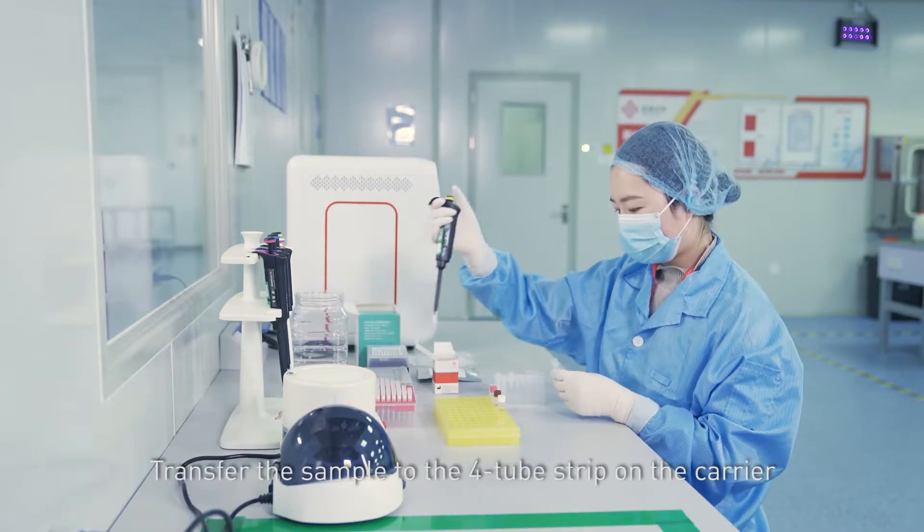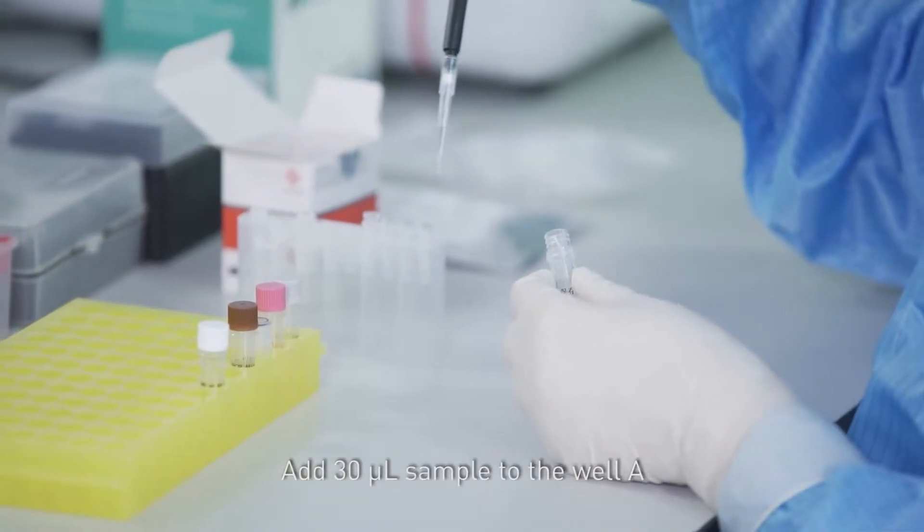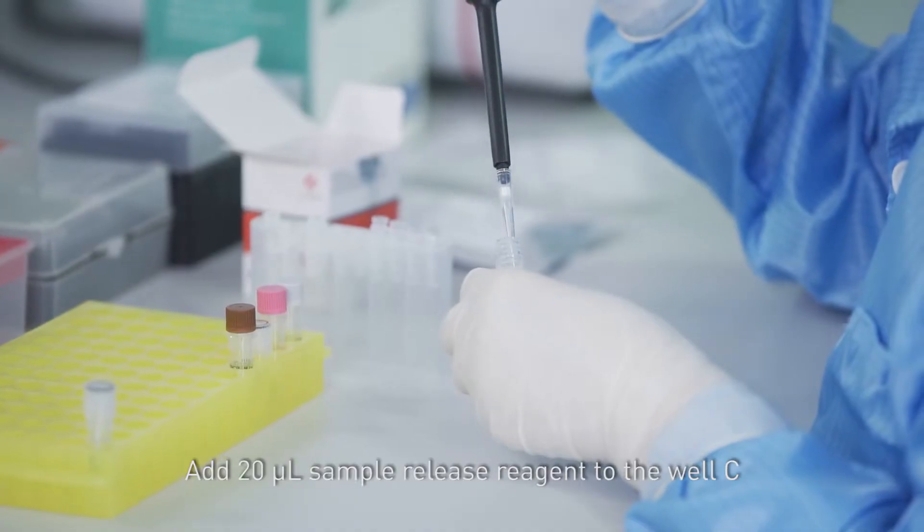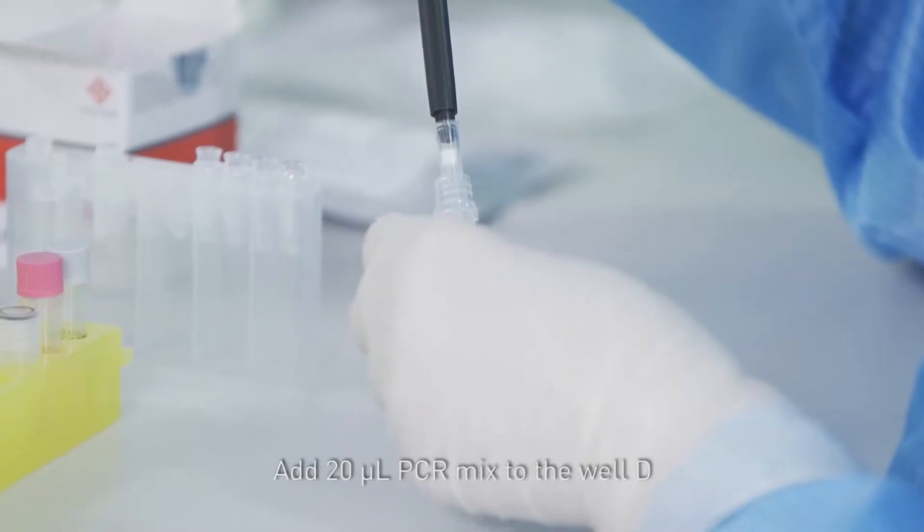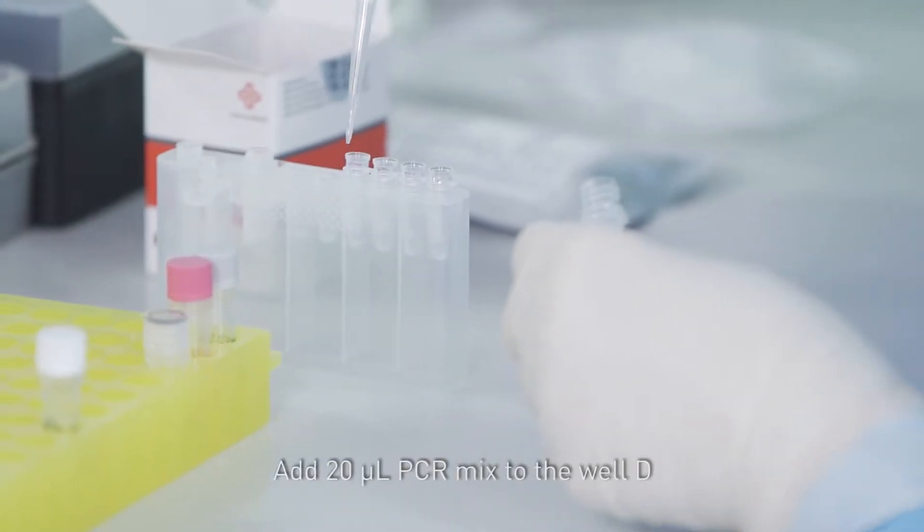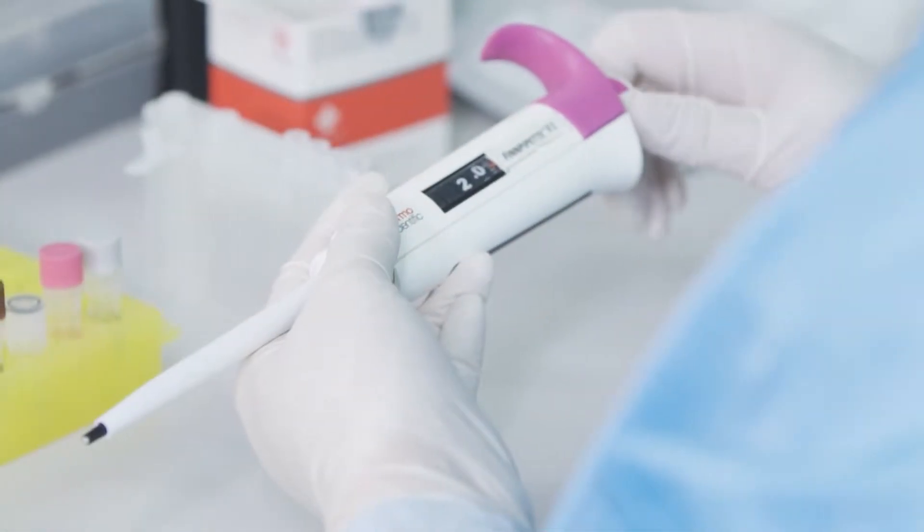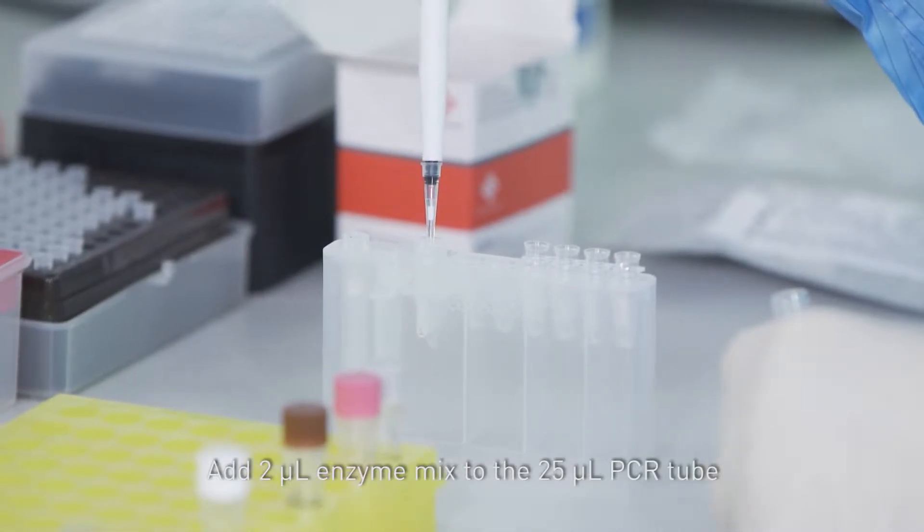Transfer the sample to the 4-tube strip on the carrier. Add 13 µL sample to well A. Add 20 µL sample release reagent to well C. Add 20 µL PCR mix to well D. Add 2 µL enzyme mix to the 25 µL PCR tube.